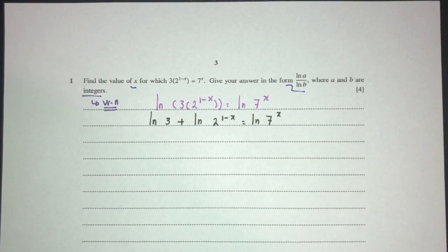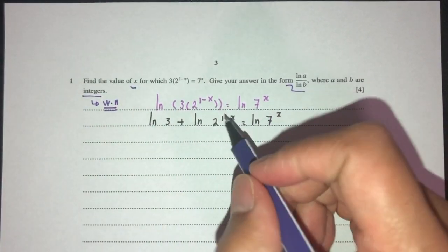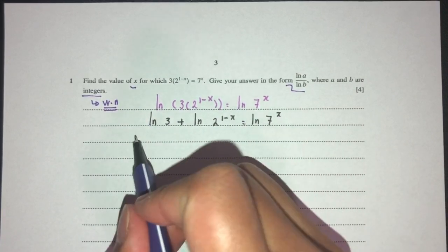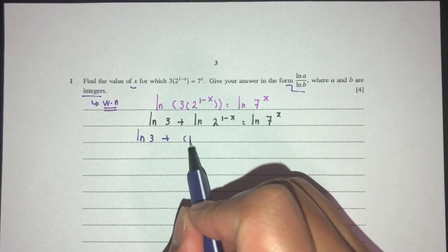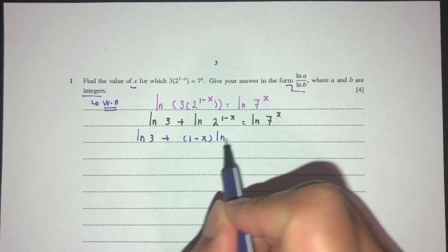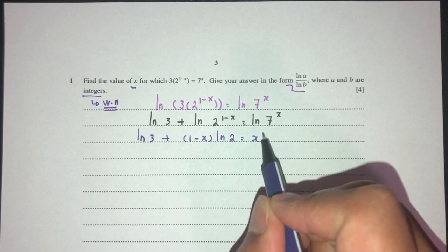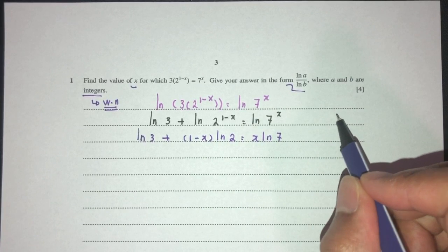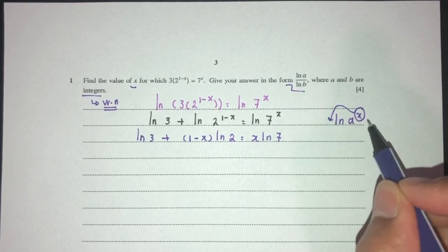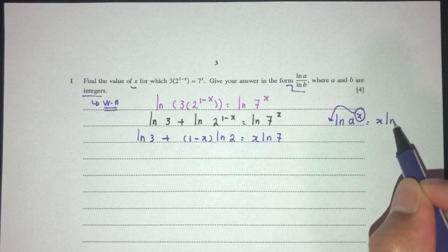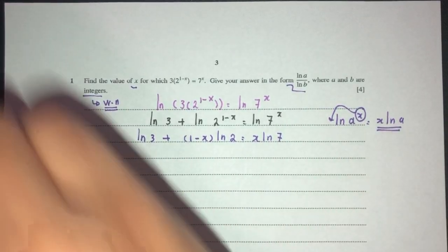We can try to bring the x down here by the laws of log. This will be the same, it will not change for now. And this will become (1-x) ln 2. That'll be x ln 7. Because we have to know, if you have ln of a power of x, we can bring the power down. It's the same thing as saying x ln a. That's something we have to know to solve this equation.